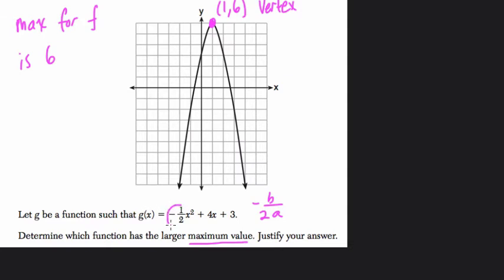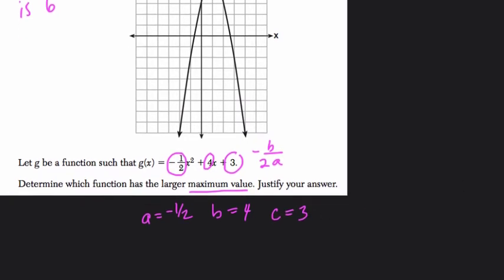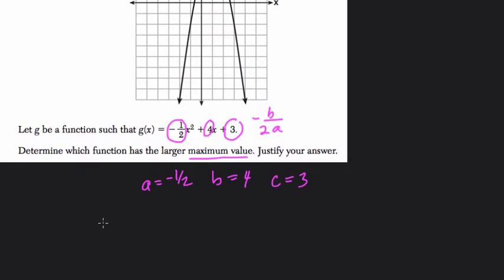In g(x), a equals negative one-half, b equals 4, the coefficient of x, and c is 3, which is not relevant here, but that comes into play in the quadratic equation. So that means the x value for the vertex equals negative 4, that's negative b, over 2 times negative one-half.